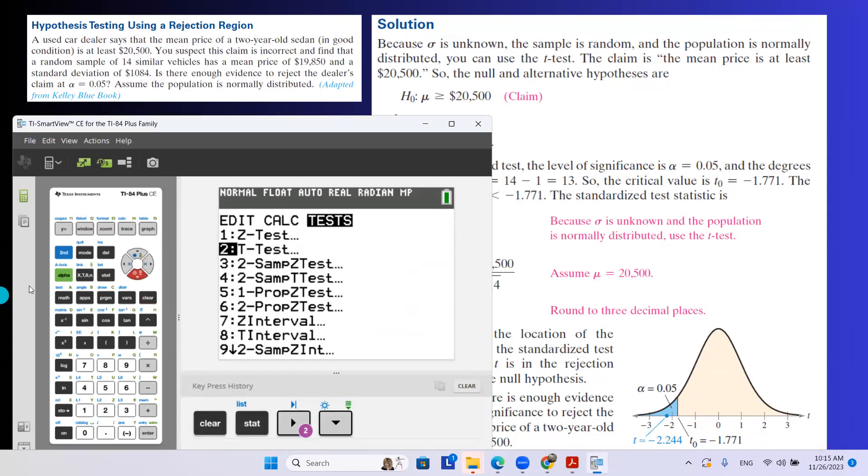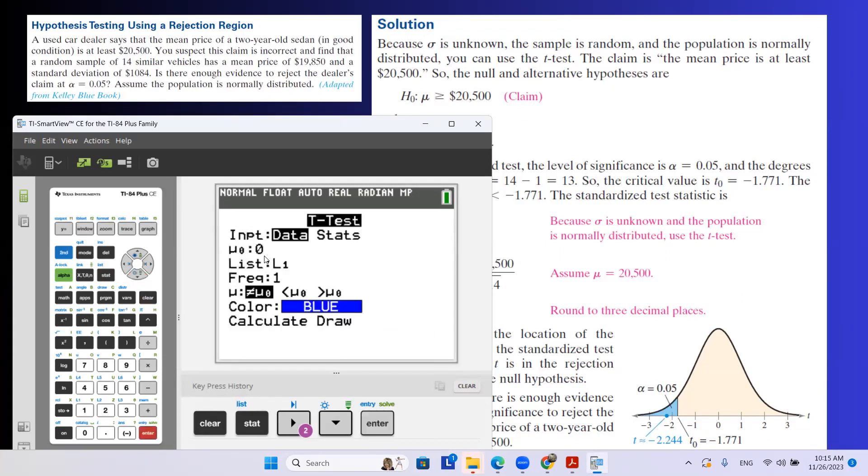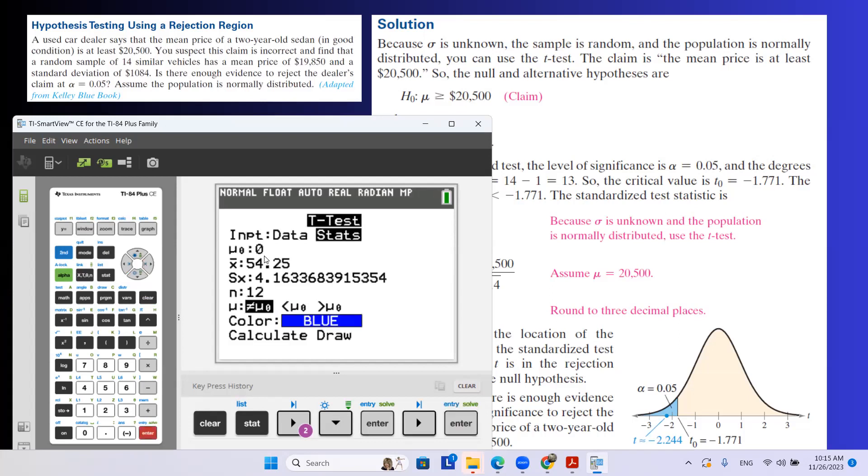So you're going to go to stat and you're going to go to the test. This is a t-test because sigma is missing. So when you go to the t-test, you don't have the actual data. You have the statistic of the data. Mu sub zero is the proposed population mean, which is 20,500.